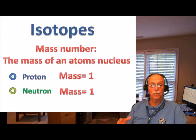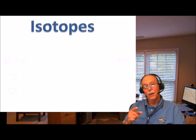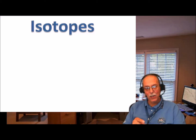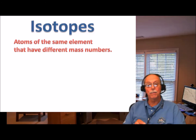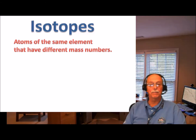So what is an isotope? By definition, an isotope is atoms of the same element that have different mass numbers.